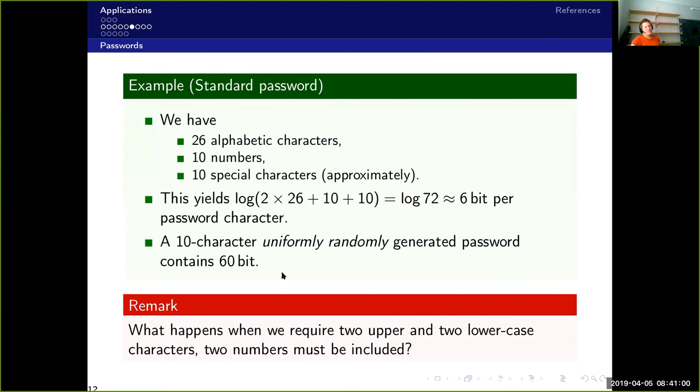Now, what would actually happen if we require that two upper and two lower case characters and two numbers must be included in this and say a special character as well, which is usually the case. Well, what happens here is that you eliminate a lot of possibilities from this space that you have. So this actually decreases the space. So the entropy would actually be much less than 60 bits once you introduce these requirements in the password policy. So the idea of the password policy is to increase the security of the passwords, but theoretically from this point of view, it actually lowers the possibility.